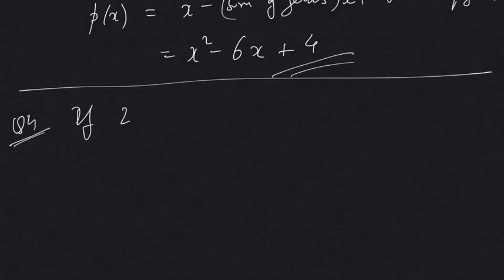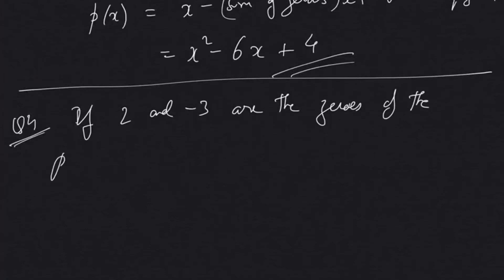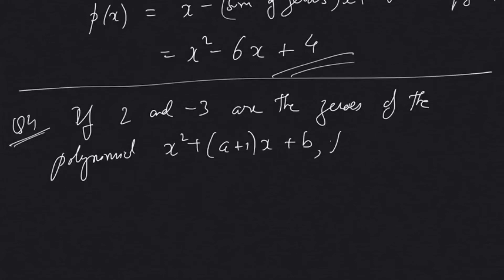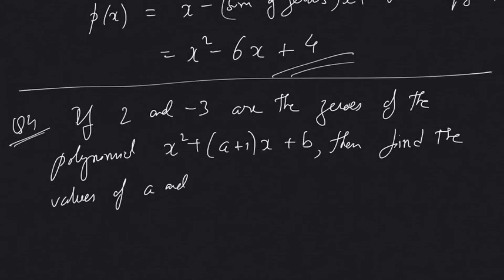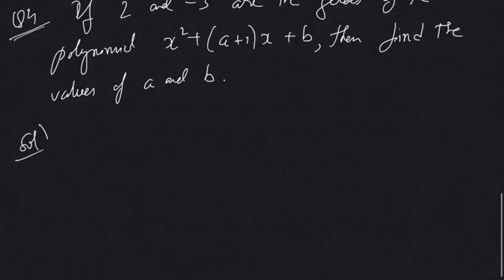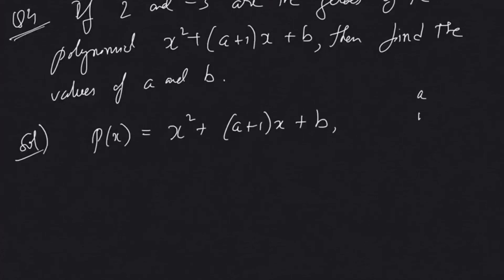Question four: If 2 and −3 are the zeros of the polynomial x² + (a + 1)x + b, then find the values of a and b. In our given quadratic polynomial x² + (a + 1)x + b, we have missing values a and b, and the question tells us to find them. The zeros are given to us as 2 and −3.